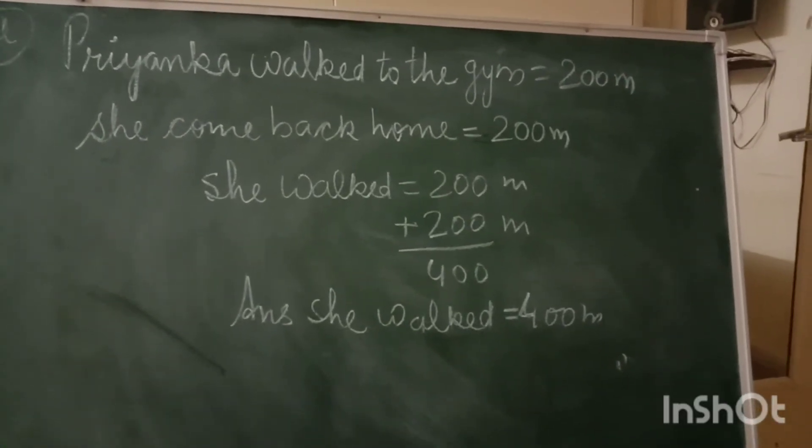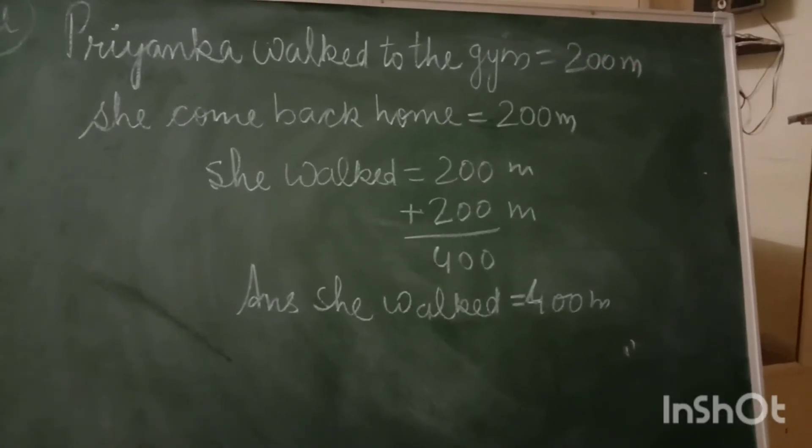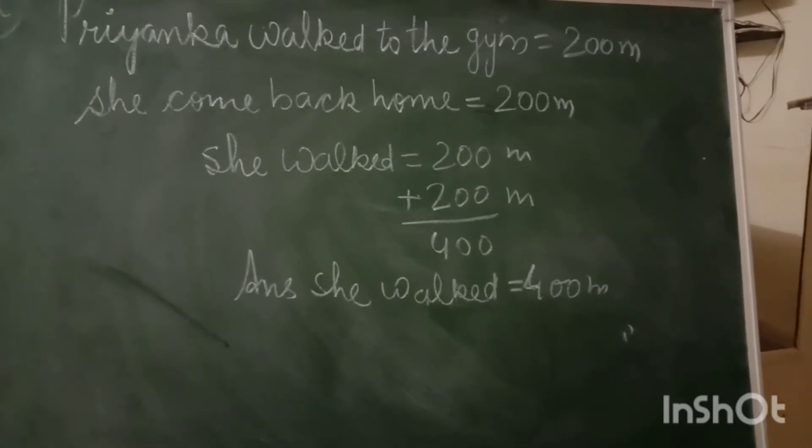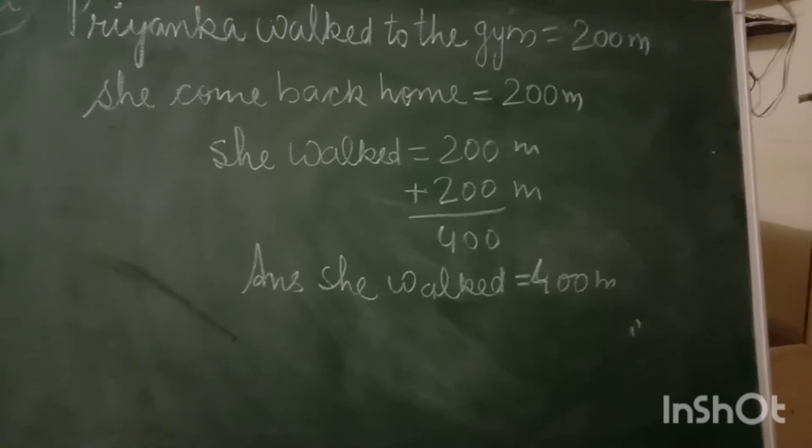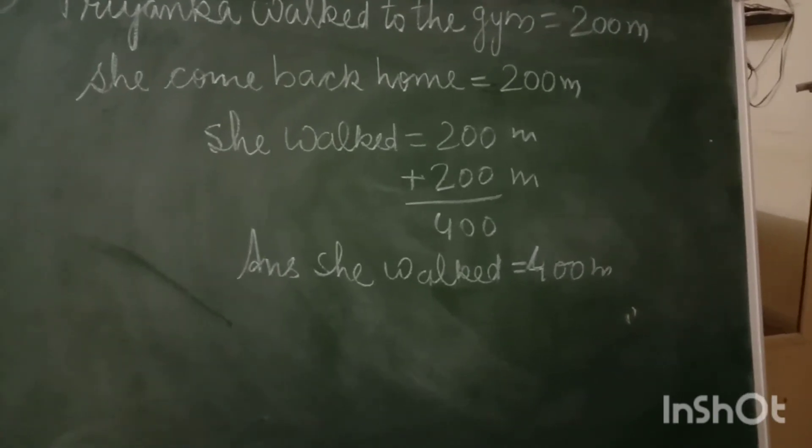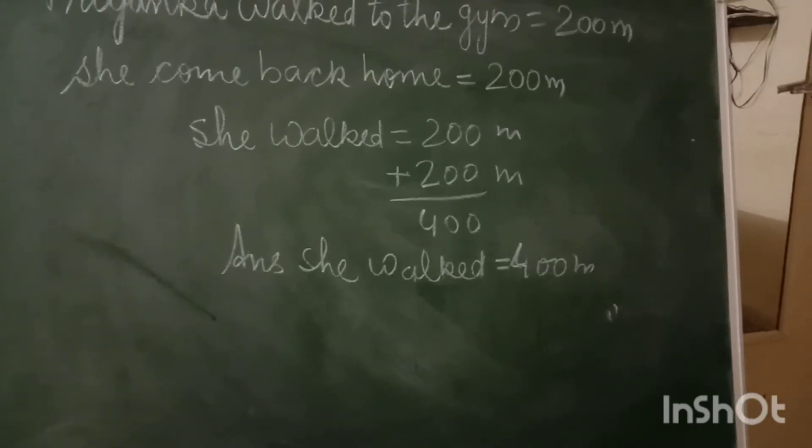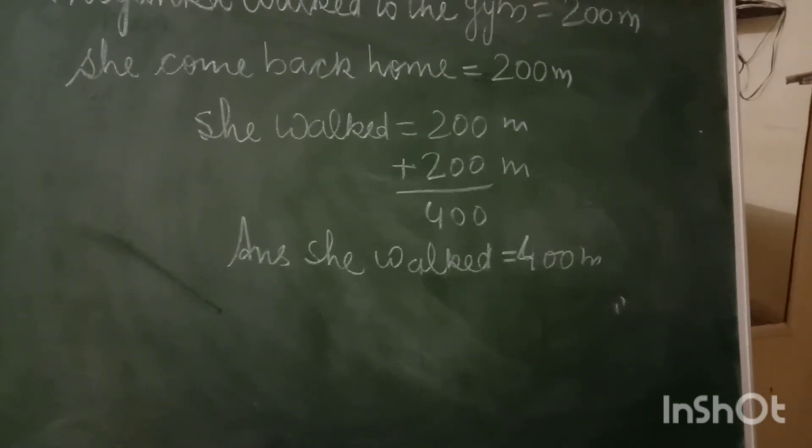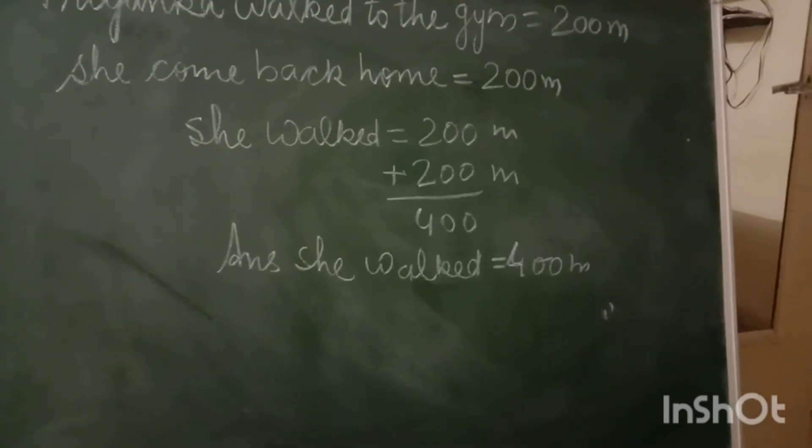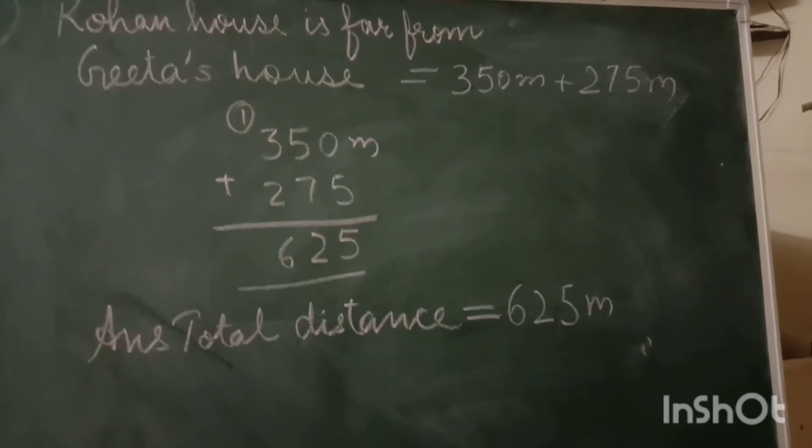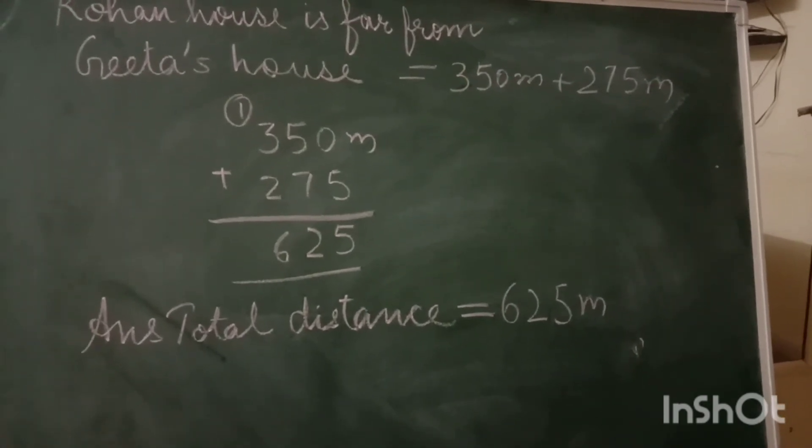So Priyanka walked to the gym 200 meters. She came back home 200 meters. She walked equal to, you have to add the numbers so that you will get the total distance covered. 200 plus 200 equals 400. She went to gym 200 meters then came back home 200, so total distance she covered was 400 meters.